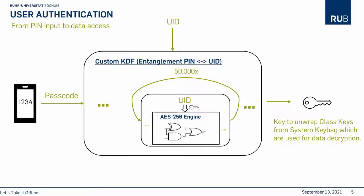The UID is used for user authentication, so this might be an interesting target to recover. To understand what we gain from extracting the UID, let's take a brief look at how user authentication works for the iPhone. The user enters their passcode, which is then entangled with the UID key to derive another key. This derived key is then used to decrypt or unwrap the so-called class keys, which are in turn used for data decryption. Deriving the key to unwrap the class key is done by a custom KDF, where the AES engine is invoked recursively with the passcode as an initial input and the UID key as the key for the AES.